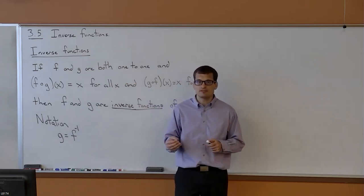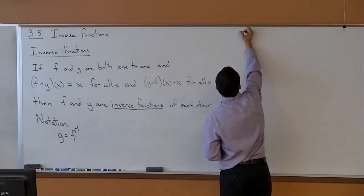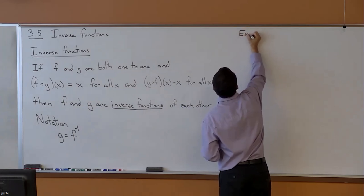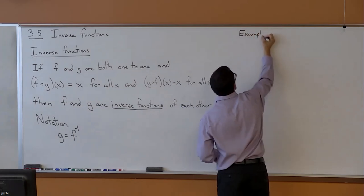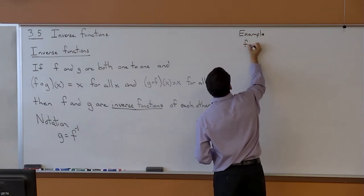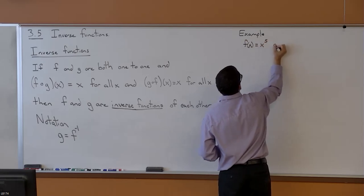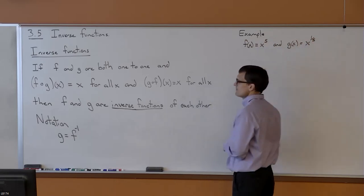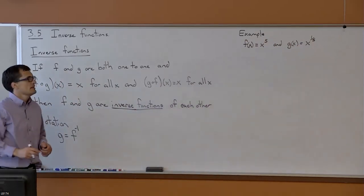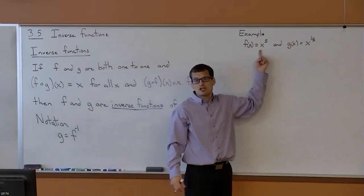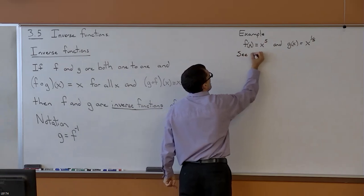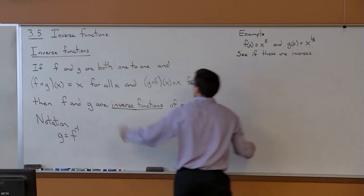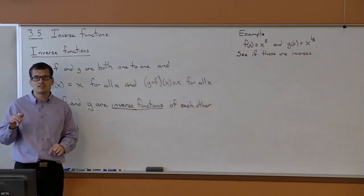This one-to-one thing is very important. Oftentimes people will see this. They'll say, let's look at F of X equals X to the fifth, and G of X equals X to the one-fifth power. And let's see if these are inverses of each other. Well, they're both one-to-one — they pass the horizontal line test if you check them.